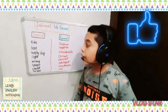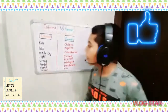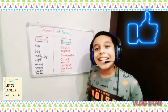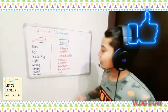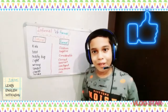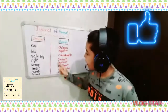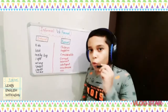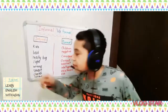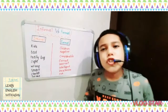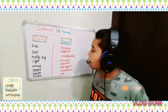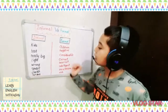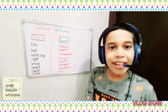Another informal word is wrong. The formal word of wrong is incorrect — we just add 'in' before correct. Our next word is smart, and the formal word of smart is intelligent.